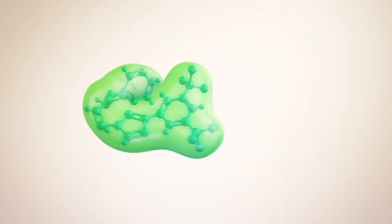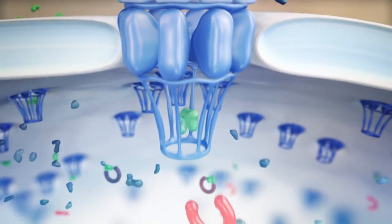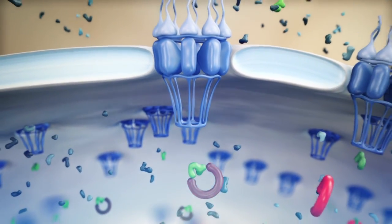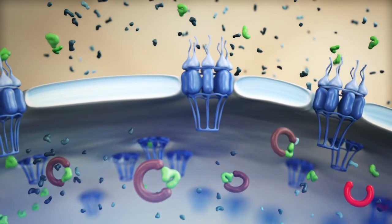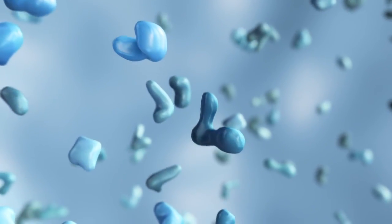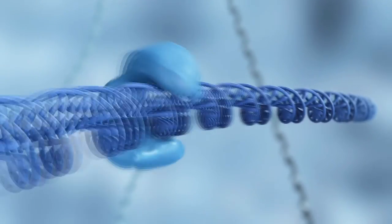The first in class XP01 antagonist can do just that. The drug blocks the transporter XP01 and inhibits the binding of tumor suppressor proteins. Key proteins in the fight against cancer are retained in the nucleus and maintain their function.